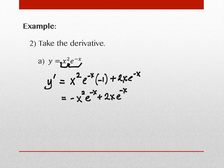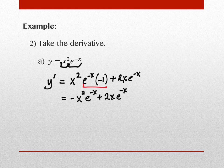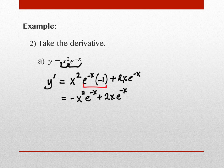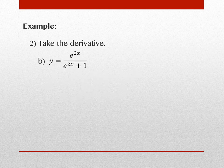A student asked why we get e^(−x) in the chain rule step: the derivative of eˣ is eˣ, so the derivative of e to any power is e to that power — that's why e^(−x) stays unchanged. Then we multiply by the derivative of the exponent, which is −1. The next example uses the quotient rule.